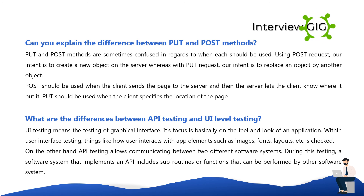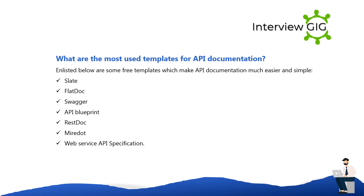What are the differences between API testing and UI-level testing? UI testing means testing the graphical interface; its focus is basically on the look and feel of an application, checking how users interact with app elements such as images, fonts, and layouts. API testing, on the other hand, allows communication between two different software systems. During API testing, a software system that implements an API includes subroutines or functions that can be performed by another software system.